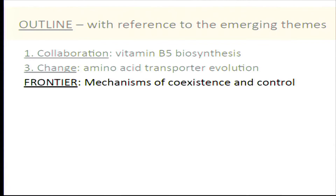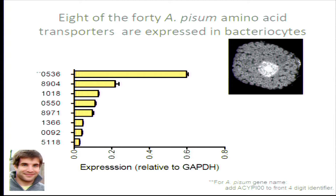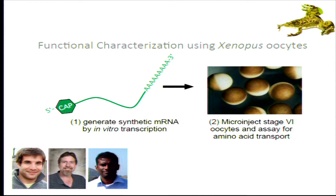Finally, to the frontier: mechanisms of coexistence and control. Here we've really been asking how the host and symbiont are metabolically and developmentally integrated. Of those 40 pea aphid amino acid transporters, eight are expressed in bacteriocyte cells, with five showing notably higher expression than the other three. For reasons of expense — making antibodies is costly — we focused on the top five transporters.